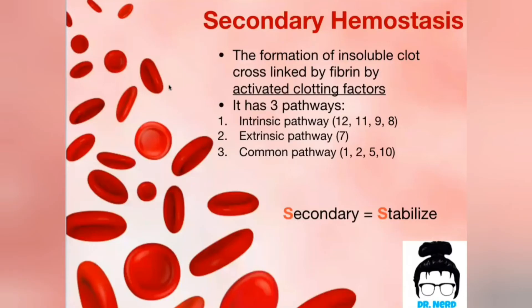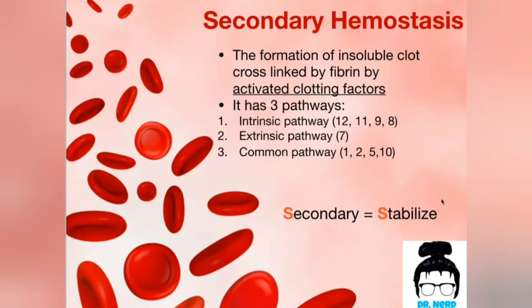So here we go again. Secondary hemostasis is the formation of insoluble clots, which is cross-linked by fibrin. A way to remember that is by remembering that the S in secondary points to the S in stabilize. So secondary hemostasis is all about stabilizing the clot.